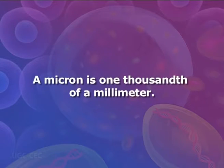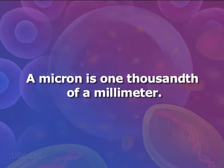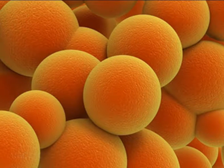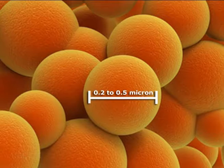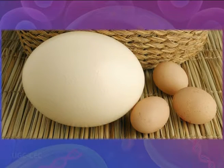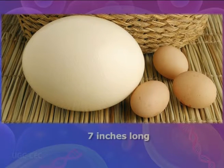Cell size shows wide variation. For the measurements of microscopic bodies such as cells, we use the unit known as a micron, which is 1/1000 of a millimeter. Certain ball-shaped bacteria lie at the lower limits of cell size, ranging from 0.2 to 0.5 microns in diameter. At the other extreme, some cells are clearly visible to the naked eye — bird eggs, for example, are actually single cells, and the ostrich egg is the largest cell at about 7 inches long.